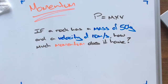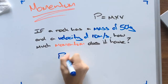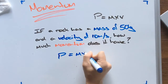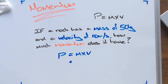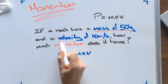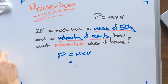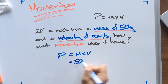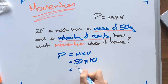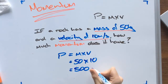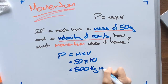We've come across a question that states: if a rock has a mass of 50 kg and a velocity of 10 meters per second, how much momentum does it have? We're going to take the formula — momentum is equal to mass times velocity — so 50 kg for the mass times 10 for the velocity, and that gives us 500 kg meters per second.